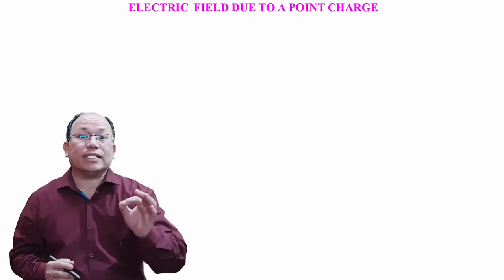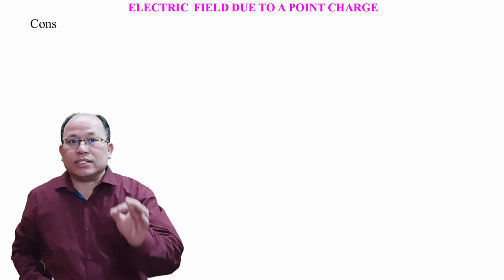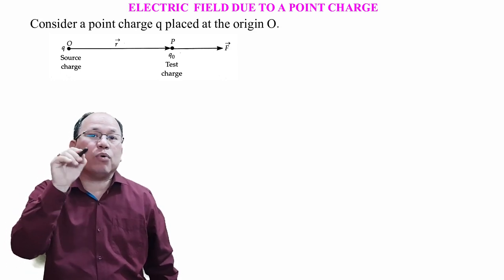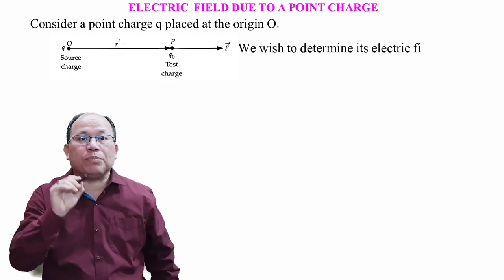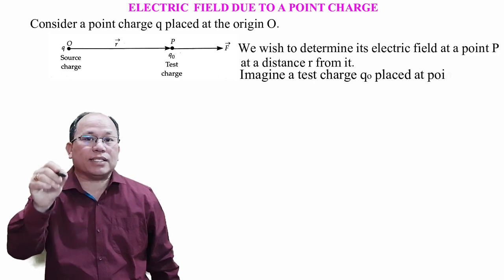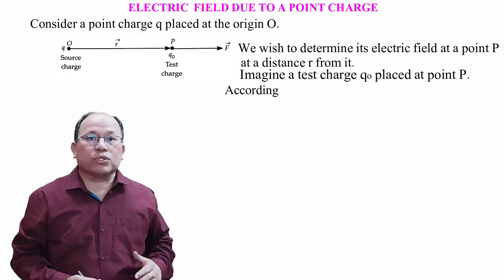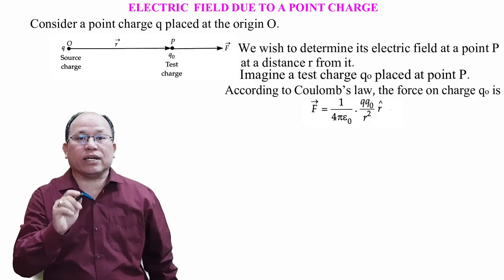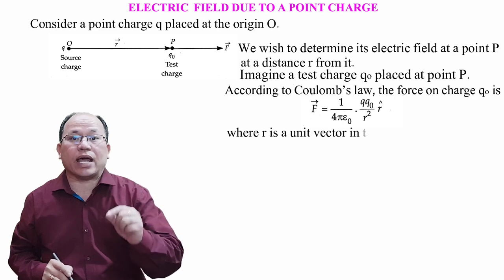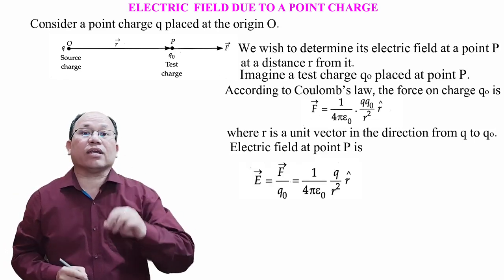Let us come to the next topic: electric field due to a point charge. Consider a point charge placed at the origin O. We wish to determine its electric field at a point P at distance r from it. Imagine a unit positive test charge q₀ is placed at point P. Then according to Coulomb's law, the force on charge q₀ is given by F vector equal to 1/(4πε₀) · Q·q₀/r² · r̂. Then we can determine the electric field. The electric field at point P is given by E vector equal to F vector upon q₀.